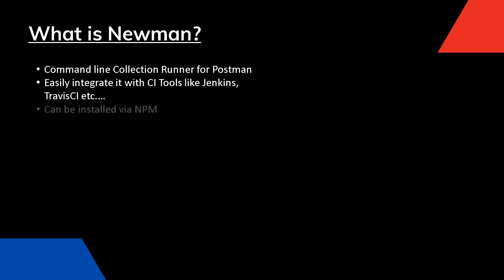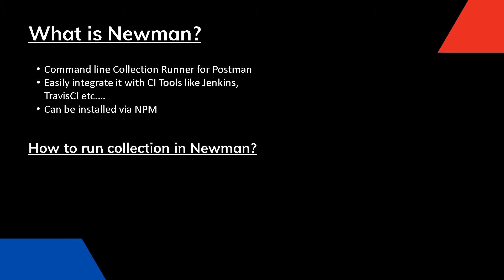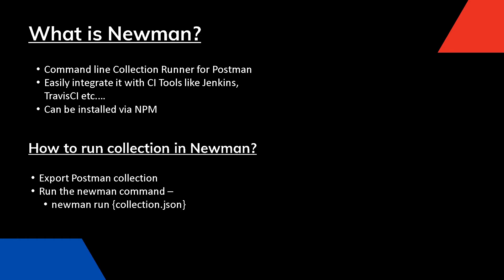Newman is an npm package so we can install it via the npm command, and we will take a look at that in a bit. To run the collection, the first thing we will do is export our Postman collection, which will be exported in JSON format, and then we can run the Newman run command — basically 'newman run' and then pass in your collection name. This will generate a basic Newman command line report for us.